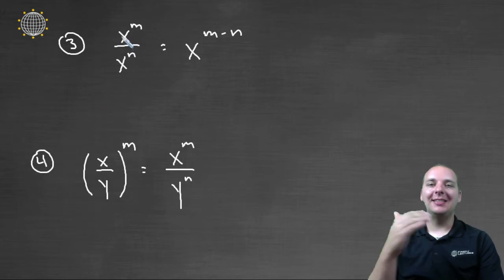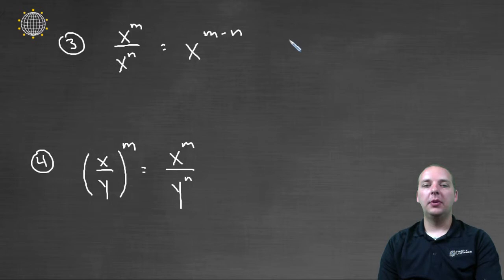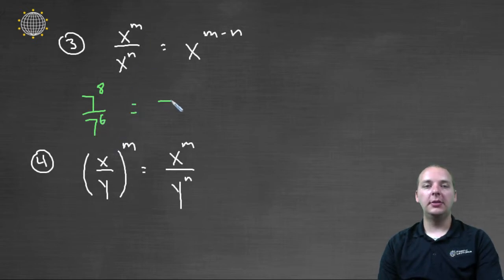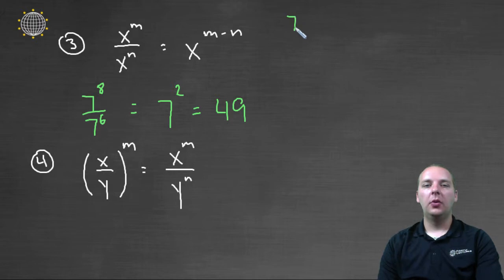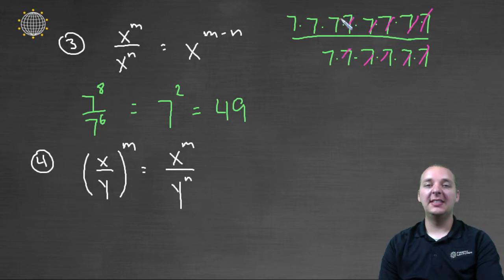The next property: what if you have x to the m divided by x to the n? Just like when we had multiplication we added the exponents, now that we have division, we'll subtract the exponents. So for example, let's say we had seven to the eighth divided by seven to the sixth. Based off of this property, this should be seven to the eight minus six, which would be two. And seven squared is forty-nine. We can also see this graphically: if we have seven times itself eight times, divided by seven times itself six times, a lot of these sevens will cancel. In fact, every one of the six factors of seven will cancel, leaving you with just seven squared in the numerator.